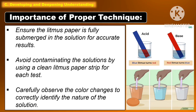The following are the importance of proper technique: ensure the litmus paper is fully submerged in the solution for accurate results; avoid contaminating the solutions by using a clean litmus paper strip for each test; and carefully observe the color changes to correctly identify the nature of the solution.